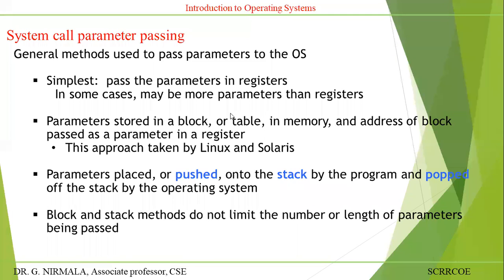But in some cases there may be more parameters than the available registers. This is a problem with the simplest method. The second method is parameters stored in a block or table in memory, and the address of that block is passed as a parameter in the register. Linux or Solaris operating systems pass parameters to the system call using a block or table — the entire data is saved in a table placed in memory, and the address of that block is transferred to the register.